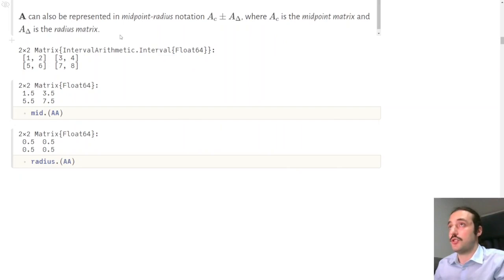Another way to represent interval matrices, which we will use later, is the so-called midpoint radius notation, meaning that I represent the interval matrix by a matrix AC, called the midpoint matrix, which contains the middle points of all the intervals, and a radius matrix A delta, which contains the radii of the intervals, which is half of the width.